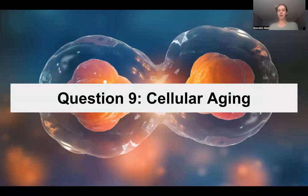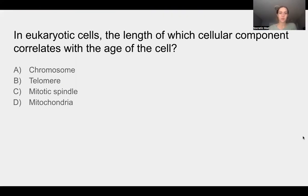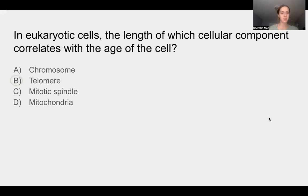Question nine is more of a bio topic — we'll talk briefly about cellular aging. In eukaryotic cells, the length of which cellular component correlates with the age of the cell? Take a minute, pause the video, and answer. The answer is B: the telomere. Telomere length is a straightforward memory question — a longer telomere indicates a younger cell, and telomeres shorten with age.